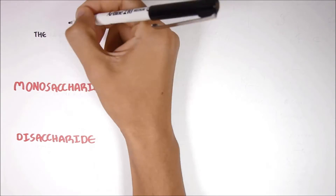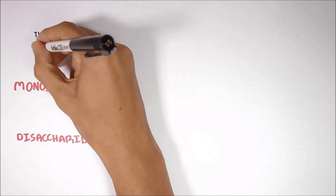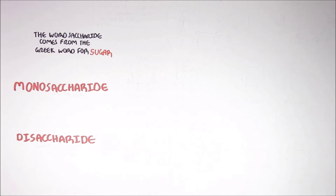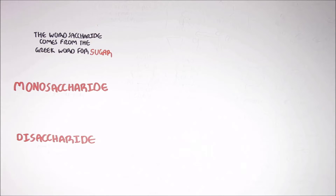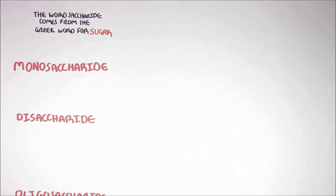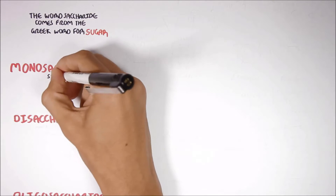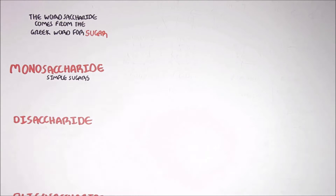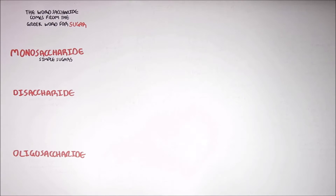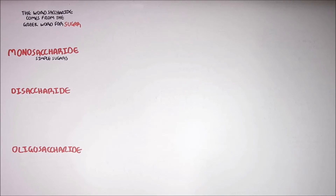The word saccharide is derived from the Greek word for sugar. Now let us look at each of these types of carbohydrates and learn a bit more about their structure and how they are formed. Let's begin with monosaccharides. Monosaccharides are also referred to as simple sugars, and they are the smallest units that make up any carbohydrate — they are the building blocks.